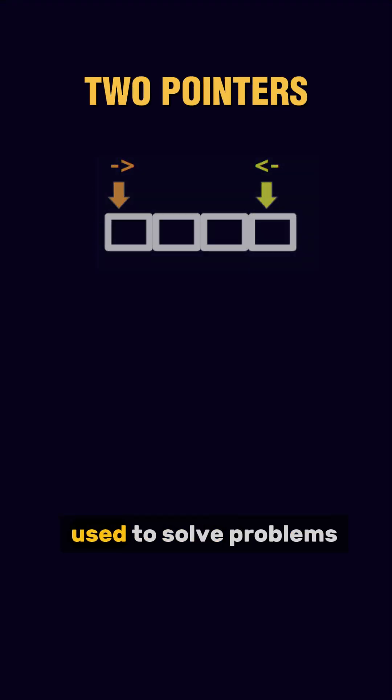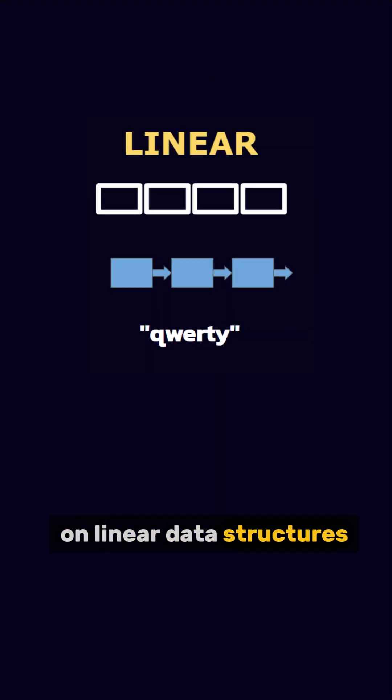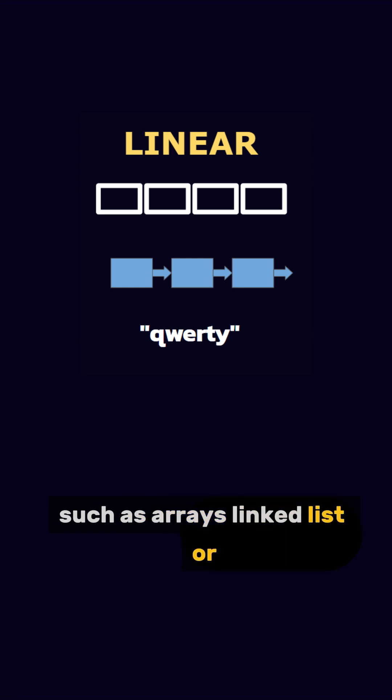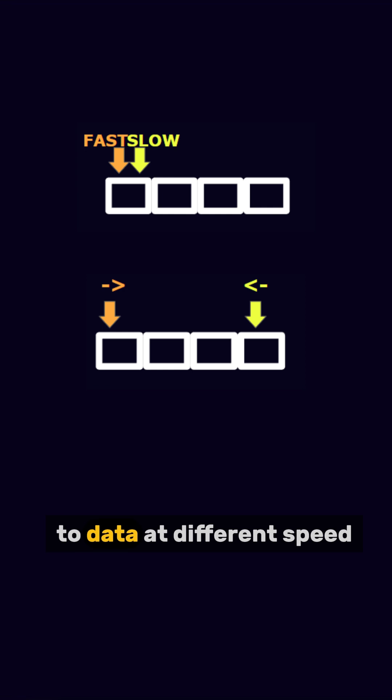Two-pointers is a versatile technique used to solve problems on linear data structures such as arrays, linked lists, or strings. The idea is to use two indices to move through the data at different speeds or from opposite ends.